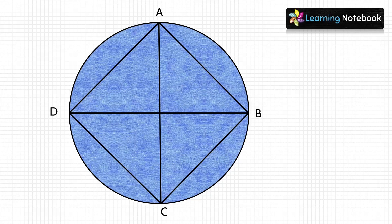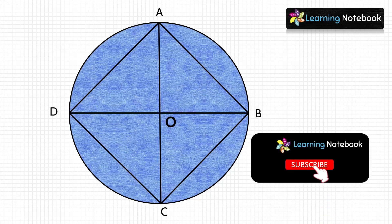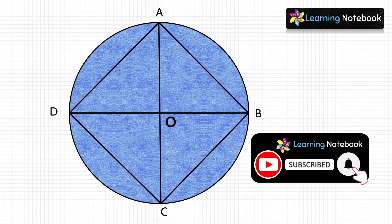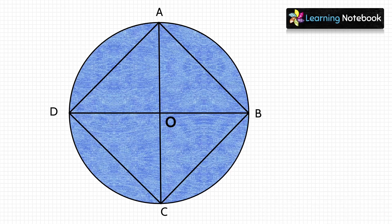We observe that diagonals AC and DB intersect at point O inside the circle, so O is the center of the circle. This was the second way to find the center of any given circle.